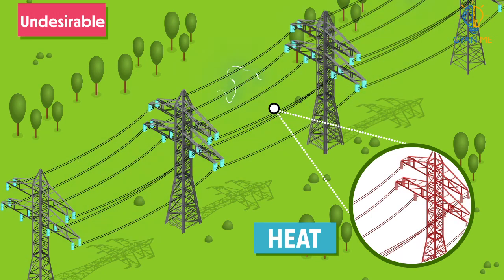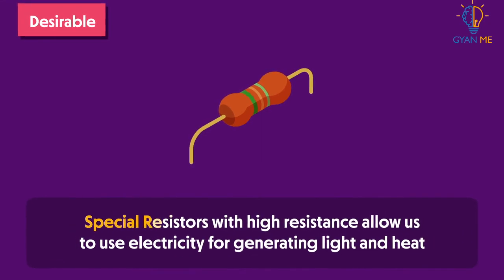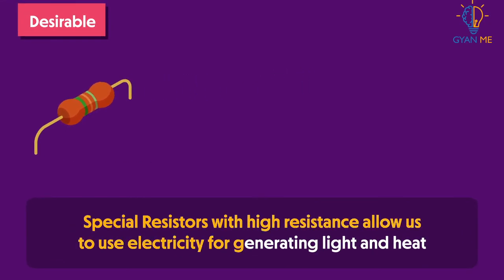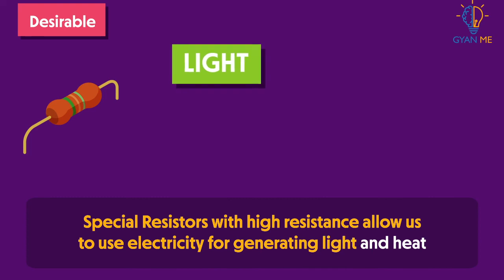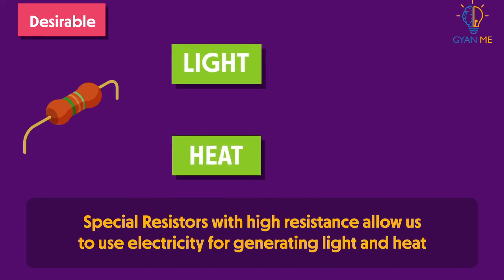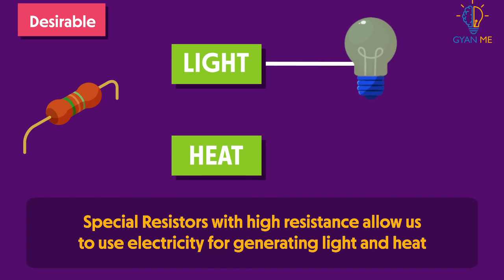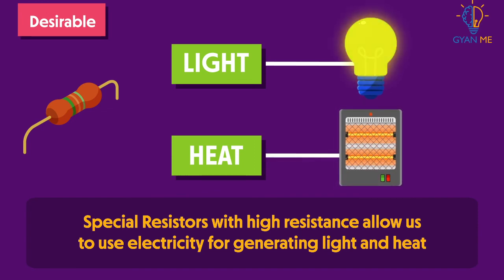On the other hand, special resistors with high resistance allow us to use electricity for generating light and heat. For example, the light we receive from an electric bulb and the heat generated through electric heaters. So in these cases, the resistance is desirable.